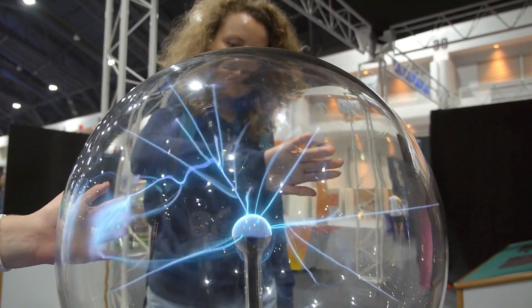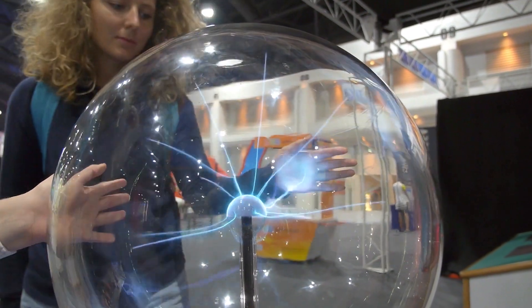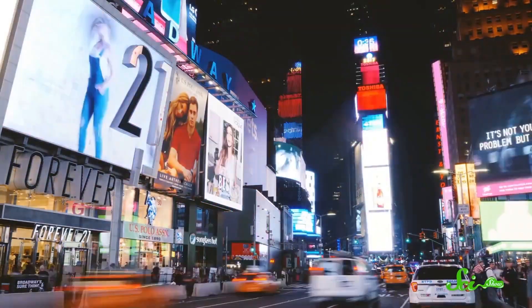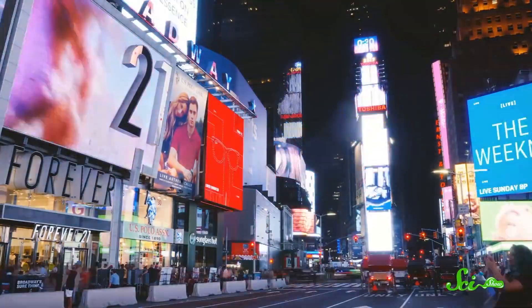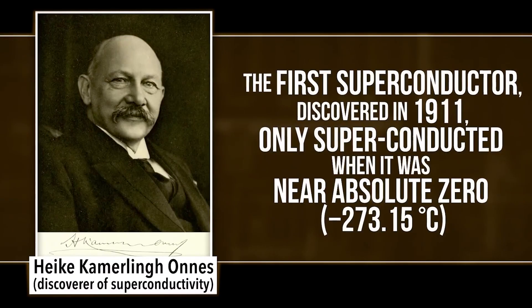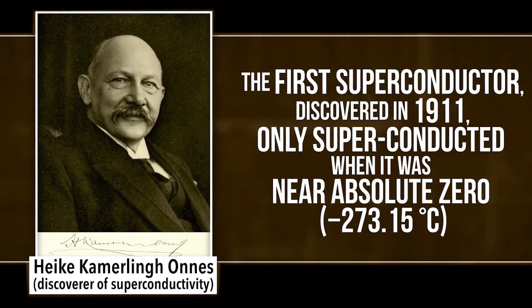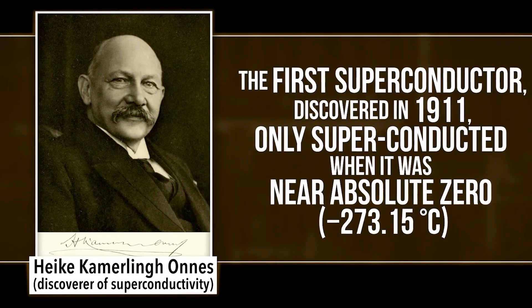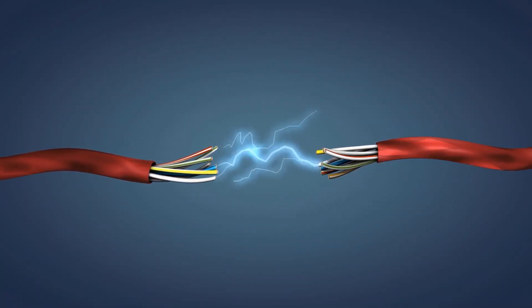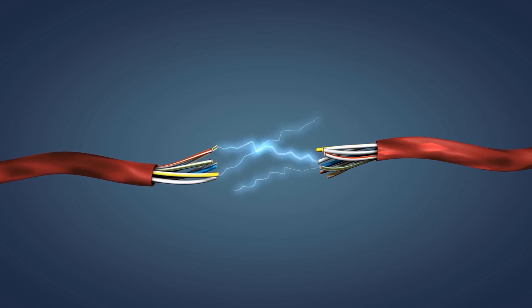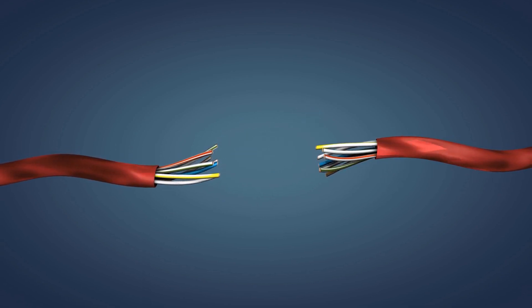When the current travels through the conductor, it faces resistance, which dissipates usable energy into waste heat and decreases the performance of all real-world electronics. But in 1911, Dutch physicist Heike Kamerling Onnes discovered that this was not the case. When the mercury wire was cooled to just above absolute zero, the resistance suddenly vanished.